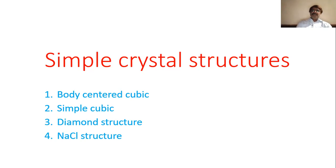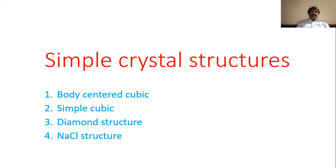Four different simple crystal structures were reviewed. We have discussed the closed packed structures, including hexagonal closed packed and face centered cubic closed packed. The remaining structures - loose packed structures - include body centered cubic (BCC) and simple cubic (SC), plus two special structures: diamond structure and NaCl structure, which we complete today.